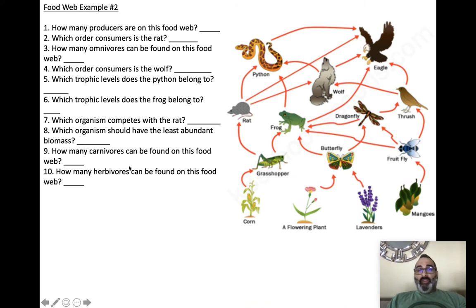Number nine, how many carnivores? Carnivores eat consumers. So they don't eat the producer. Grasshopper eats producer. Butterfly eats producer. Fruit fly eats producer. And those are producers. So the ones here, these are all the ones you'd exclude. So we have one, two, three, four, five, six, seven carnivores are on this food web.